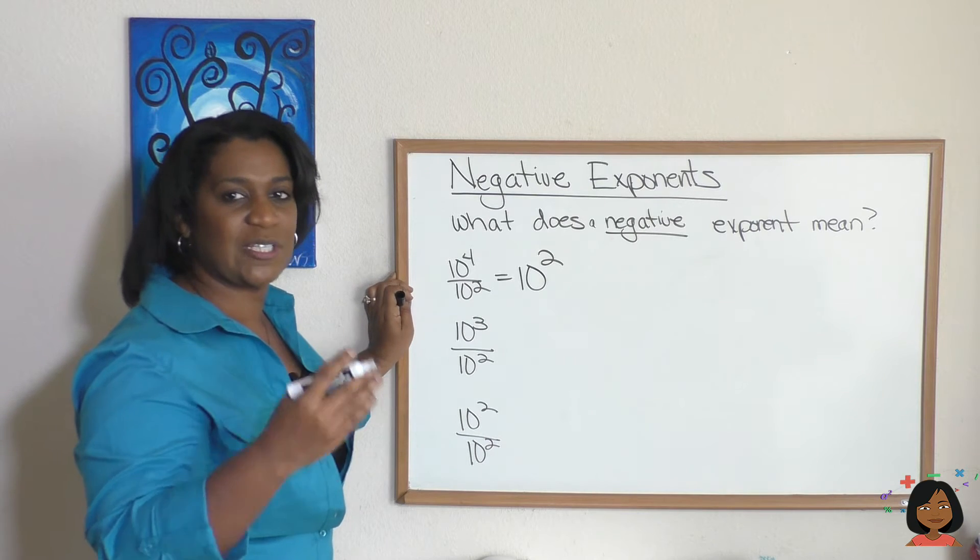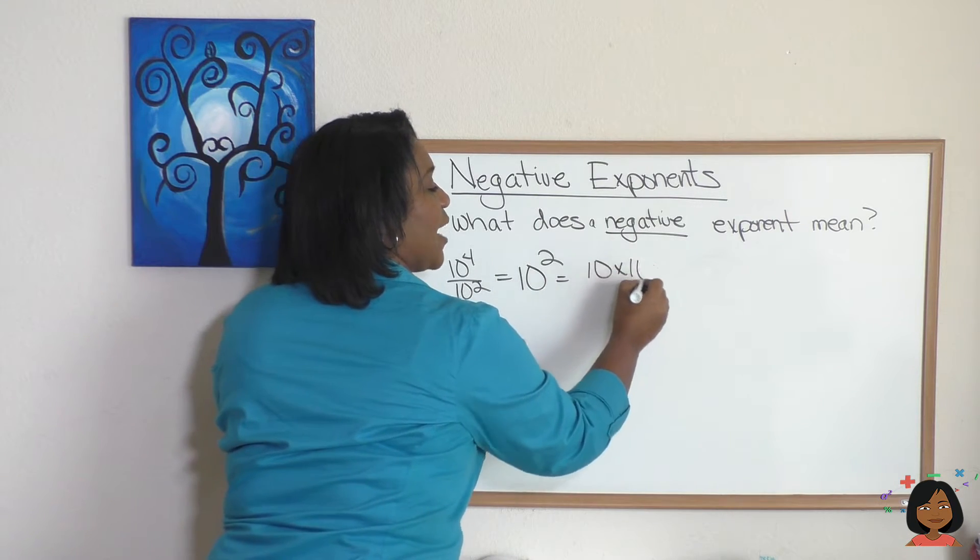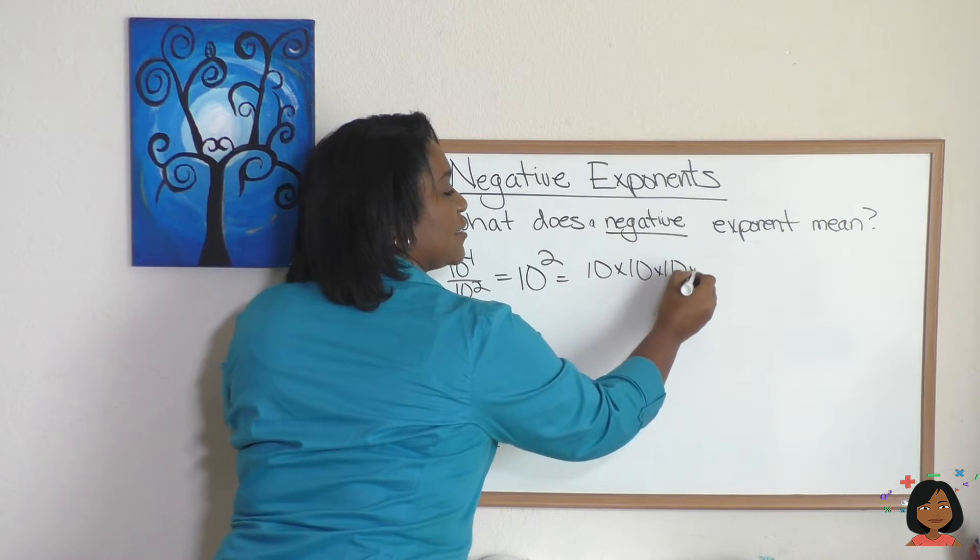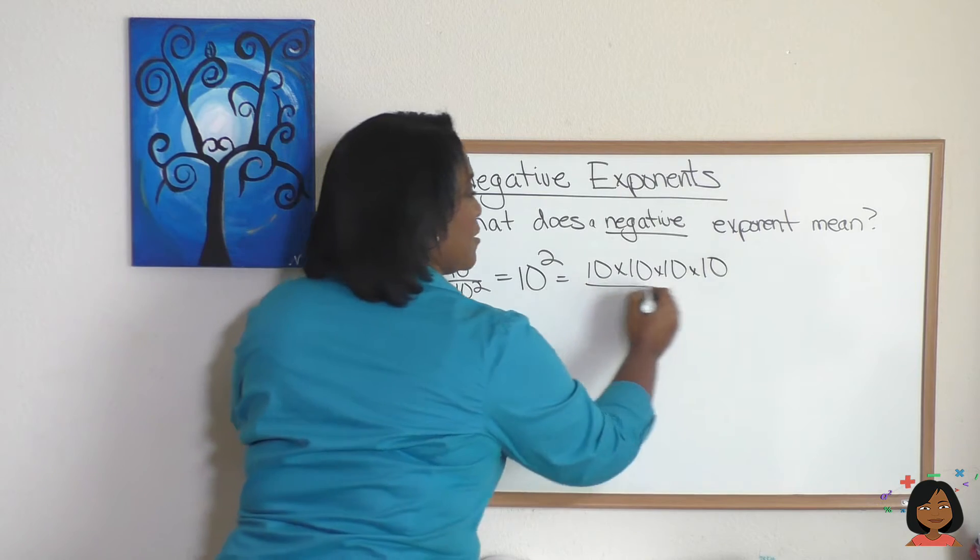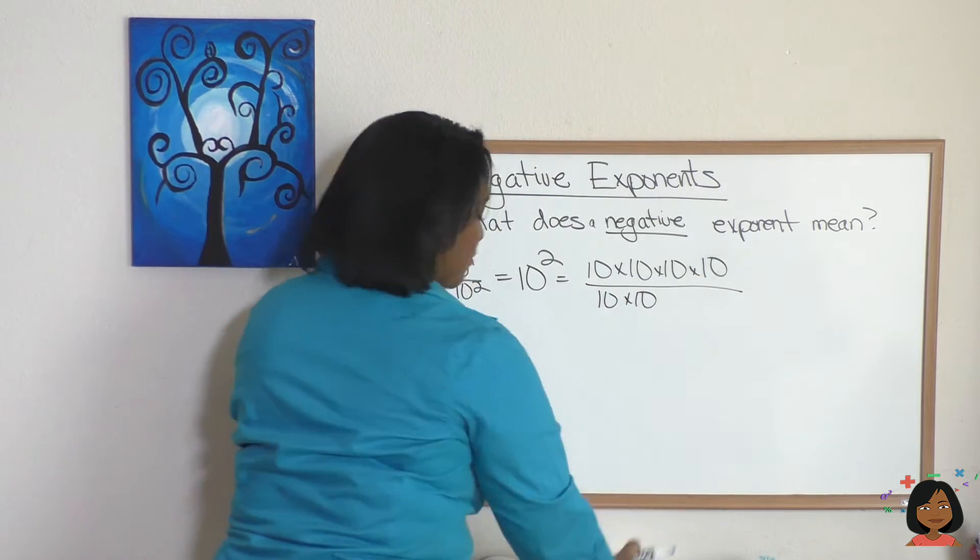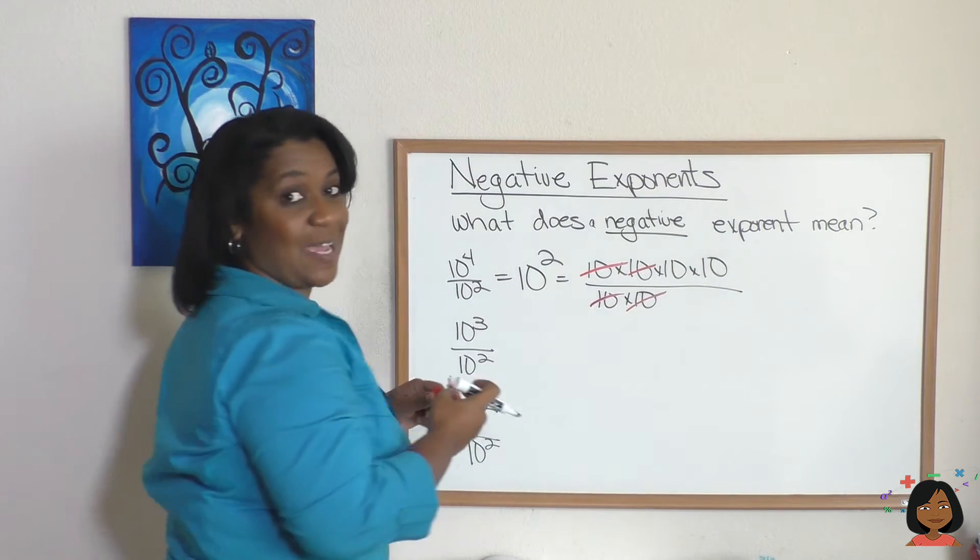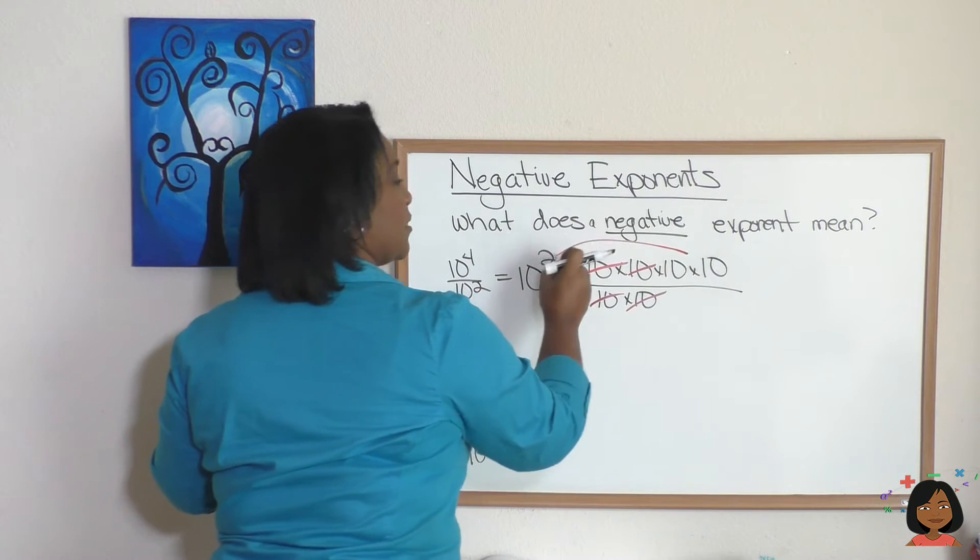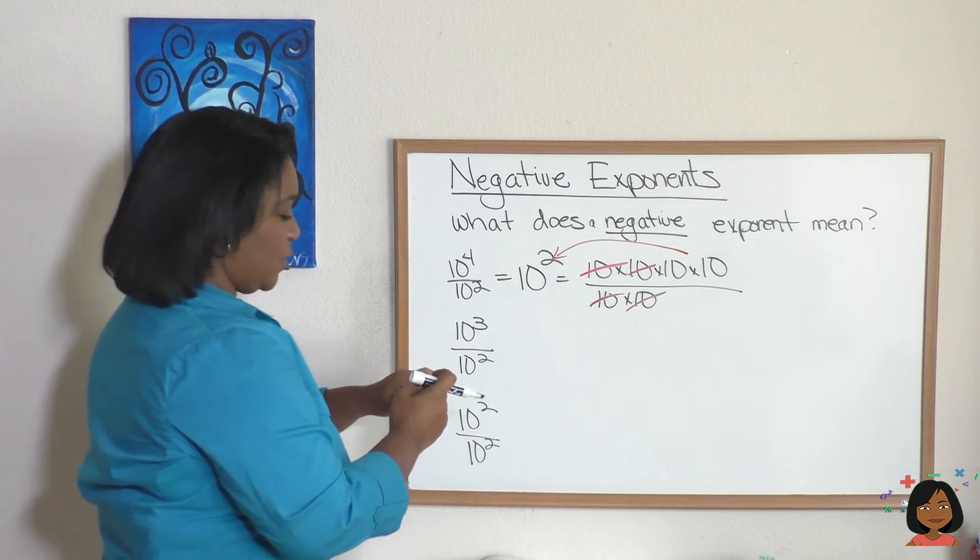But what does that actually mean? Well 10 to the fourth means 10 times 10 times 10 times 10, right? And 10 squared means 10 times 10. And if we did some simplifying here, we would find out what was left over is 10 times 10, which is 10 squared. Okay, stick with me. Let's do it again.